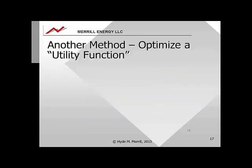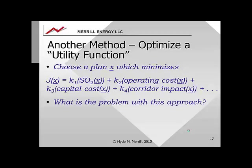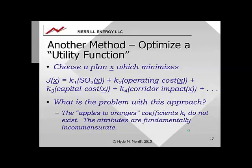Another method to deal with multiple objective problems is to optimize a utility function — converting a multi-objective problem into an optimization problem. You choose a plan vector x that minimizes a utility function J(x), which is some coefficient k1 multiplied by SO2 emissions, plus k2 multiplied by operating cost, plus k3 times capital cost, plus k4 times corridor impact, and so on. The most significant problem — the absolute deal breaker — is that the apples-to-oranges coefficients k1, k2, etc. do not exist, because the attributes are fundamentally incommensurate.